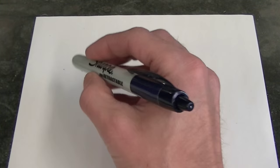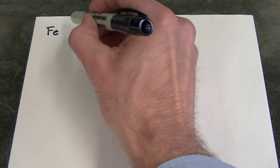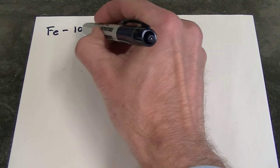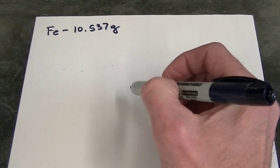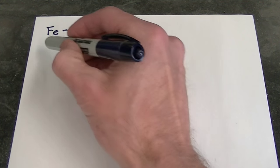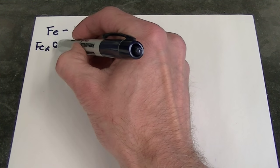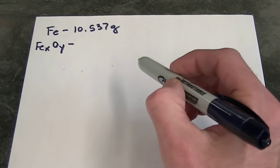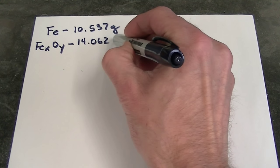We know that we started with iron. Well, we assumed that from the steel wool. And we know that we started with 10.537 grams of iron. We produced iron oxide. And we don't know the ratio of iron to oxygen in the iron oxide. That's actually what we're going to try to solve for. But we know the mass of the iron oxide. That came out to 14.062 grams.